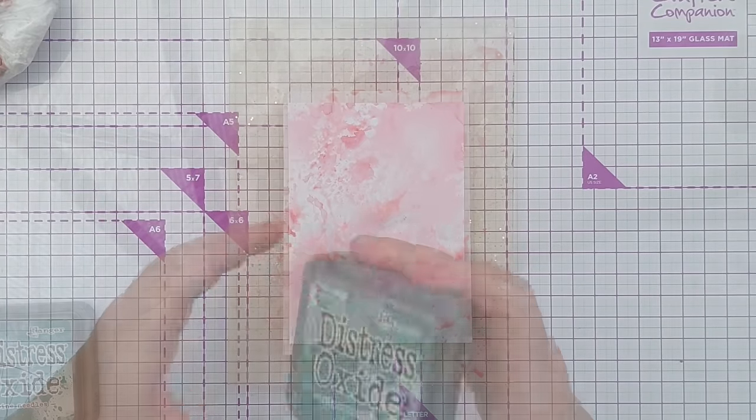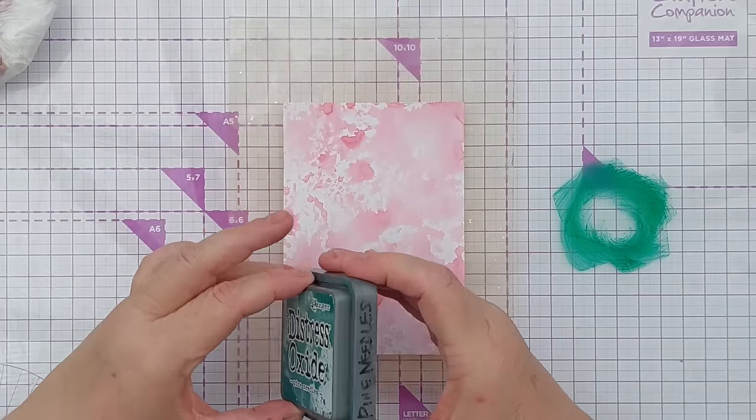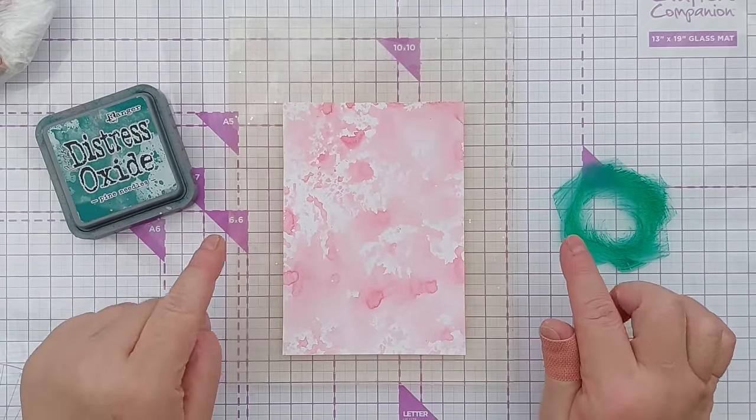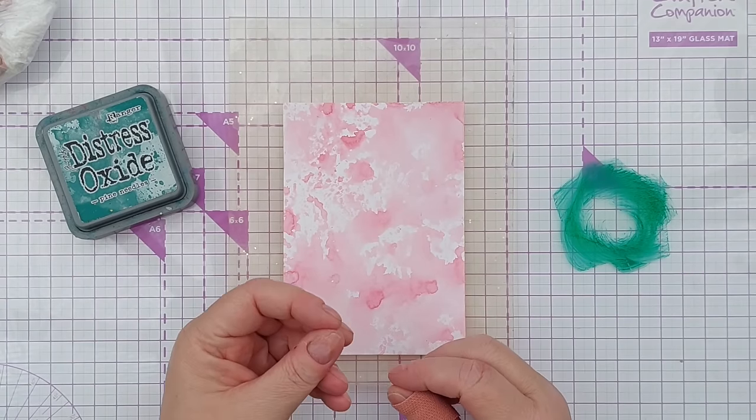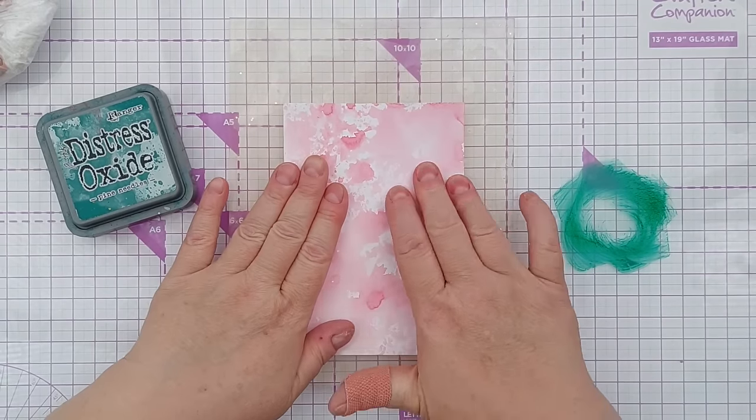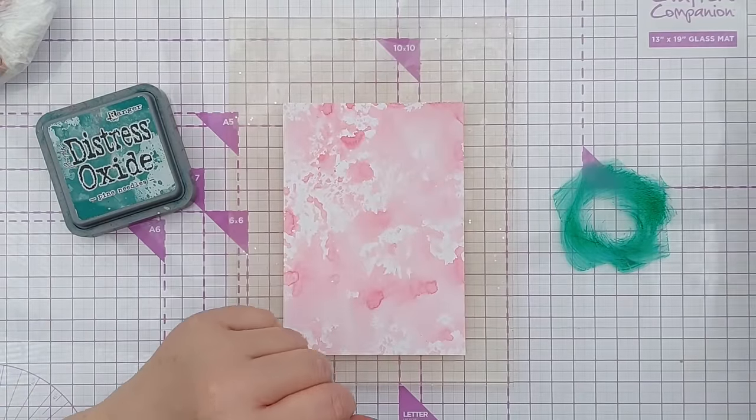I'm going to dry that with my hairdryer. Now I'm going to add a layer of pine needles and I've dried it in between because red and green are opposite on the colour wheel. They're complementary colours, but when they mix, they make a muddy brown, which I don't want.